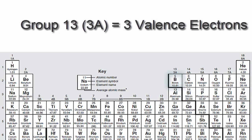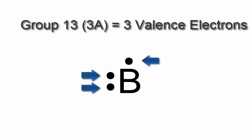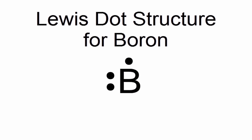Since boron is in group 13 or 3A, that means that it has three valence electrons. We'll put those three valence electrons around the element symbol, B, for boron. So that's the Lewis dot structure for boron.